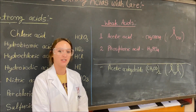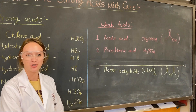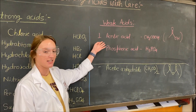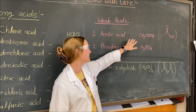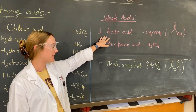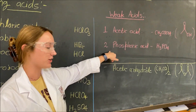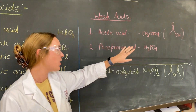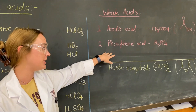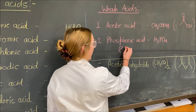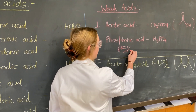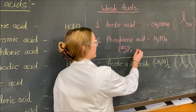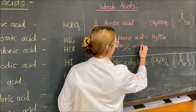You'll also be using some weak acids in Organic Chemistry 1 and Organic Chemistry 2 labs. The first is acetic acid, and we'll be using this in lab. We'll also use phosphoric acid, and you'll need to know the formula for that as well. When we use phosphoric acid, we use it at 85%, which is just as corrosive as a strong acid, so we consider it a strong acid.